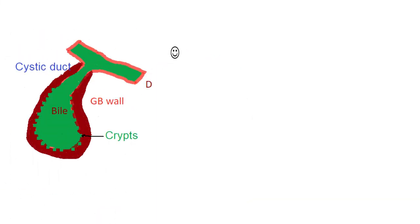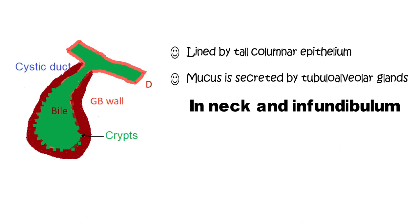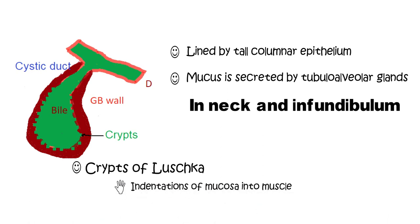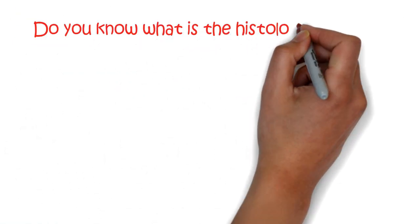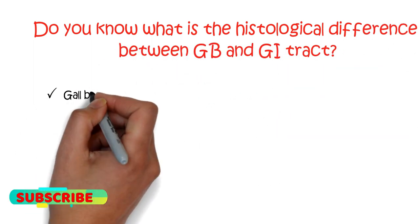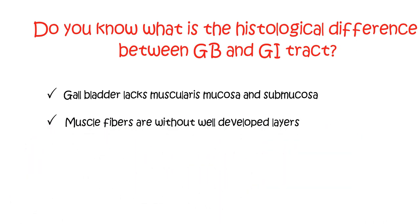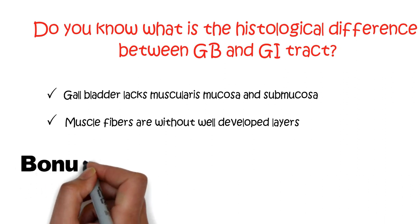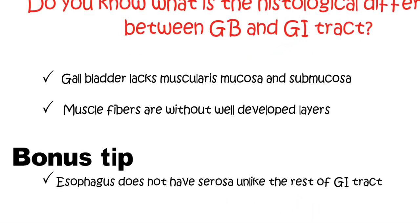The gallbladder is lined by a single, highly folded, tall columnar epithelium containing cholesterol and fat globules. Mucus secreted into the gallbladder originates in tubulo-alveolar glands found in the mucosa lining the infundibulum and neck, but not from the body or fundus. The crypts of Luschka are mucous membrane indentations of the mucosa that sink into the muscle coat. Histologically, the gallbladder differs from the rest of the GI tract in that it lacks muscularis mucosae and submucosa, and has circular, longitudinal, and oblique muscle fibers without well-developed layers. As a bonus tip, the esophagus contains all layers of the GI tract except the serosa, which is why carcinoma of the esophagus has lateral spread.